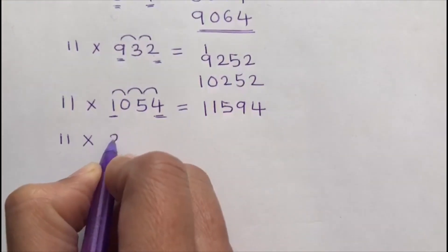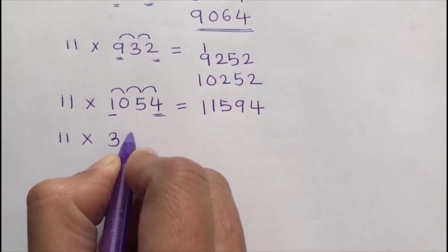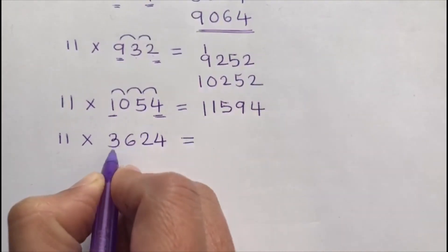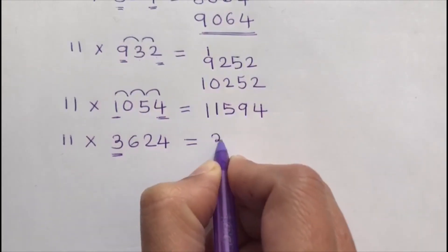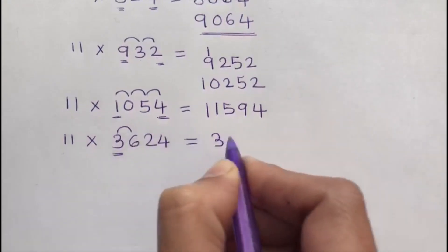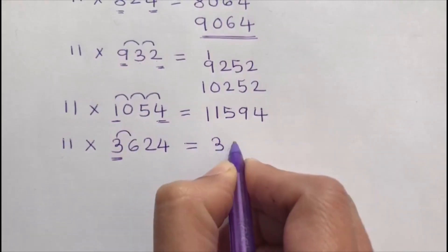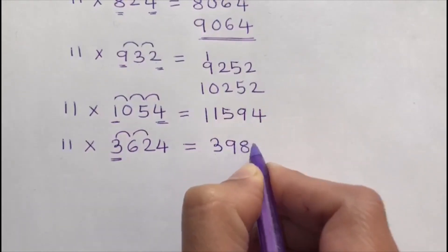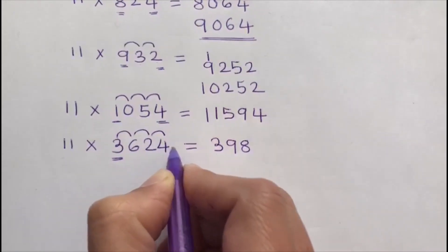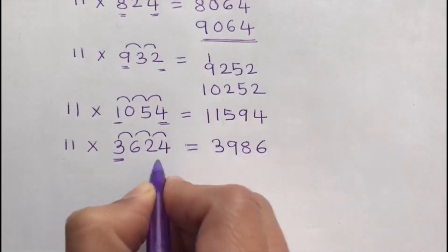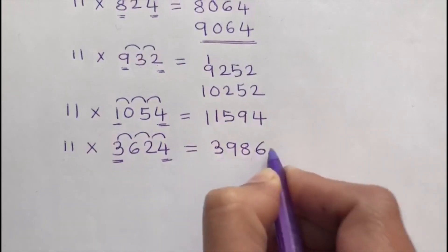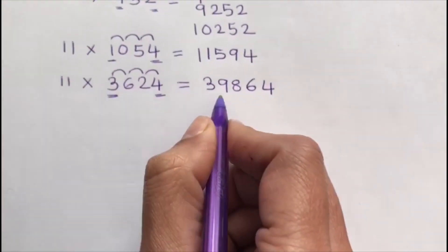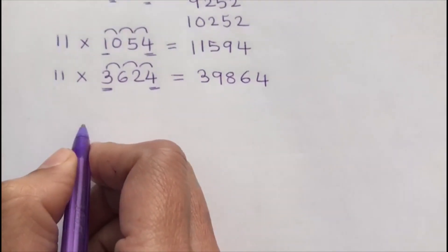Next: 11 times 36624. The first digit is 3, so I write 3. Then add 3 and 6, which gives 9. Add 6 and 2, which gives 8. Then add 2 and 4, which gives 6. Write the last digit, which is 4. So the answer is 39864.